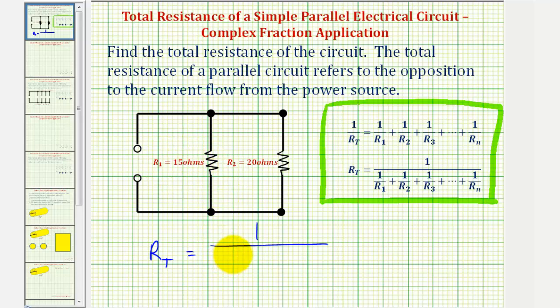Plus one over r sub two, or the reciprocal of r sub two, which we can see would be one-twentieth.